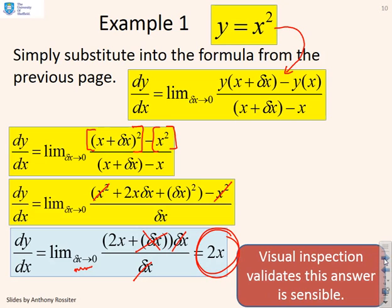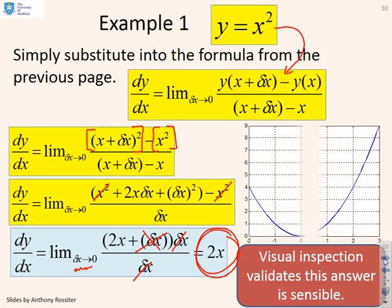You can use visual inspection to validate that this answer is sensible. Here's the curve y equals x squared: if you take x equals 1, the gradient there is approximately 2, and if you take x equals 2, the gradient is 4. A quick visual inspection shows you're getting the sort of answers you expect, so you know you haven't made a gross error.